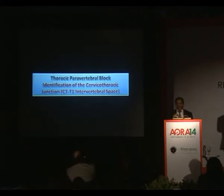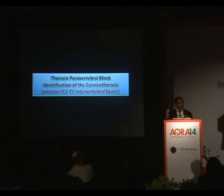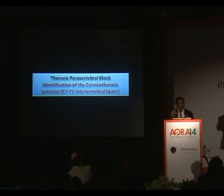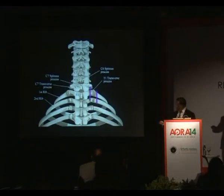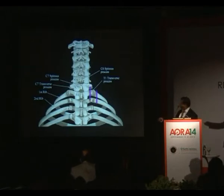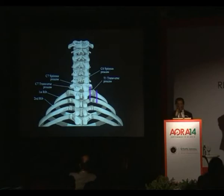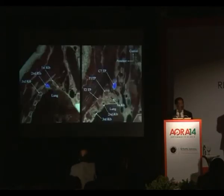Now, another secret: when you perform lumbar epidurals or spinals, I explained how you can identify a given lumbar interspace. Similarly, we worked out another system for determining a given thoracic transverse process or intervertebral level. The principle relies on identification of the C7-T1 junction. We first perform a scan at the level of the ribs, locating rib 1 and rib 2 from posteriorly, then move the transducer medially to start seeing the C7 vertebra and C7 transverse process.